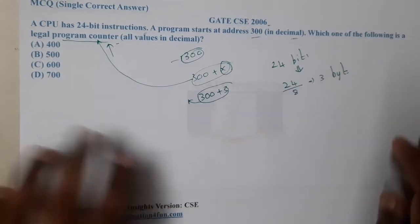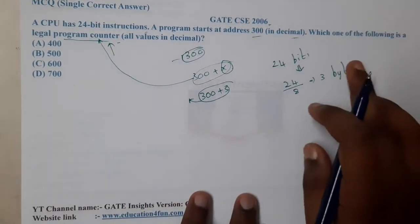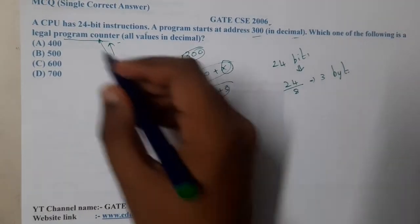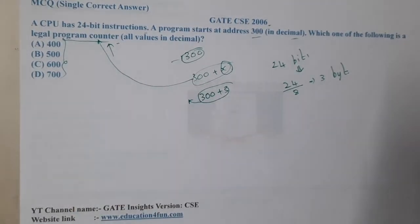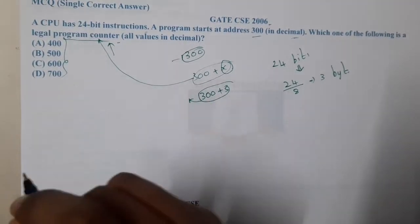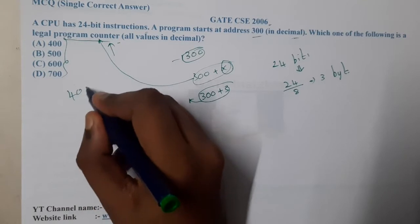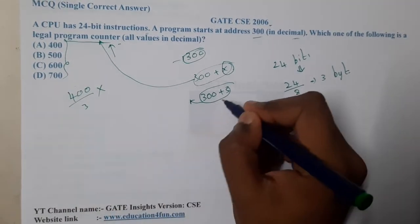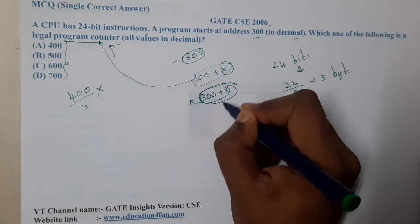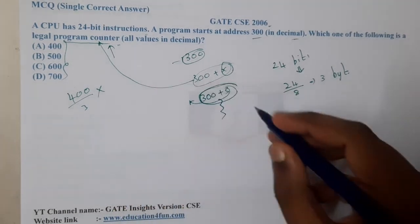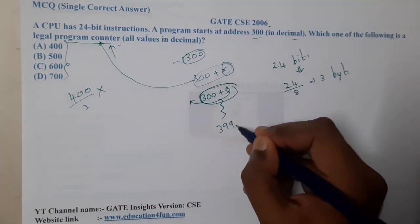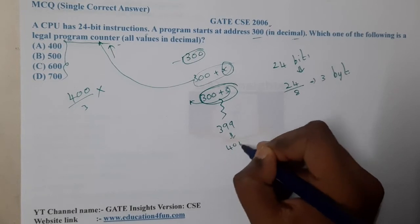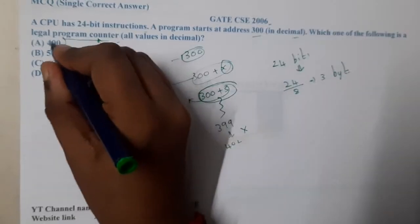Indirectly, what they are asking is what are the legal values - among these values, which could be possible? A small logic is: is 400 divisible by 3? No, right? So is there any chance that at any moment of time 400 will come? No, because 399 will come, after that 402 will come directly, hence 400 will skip.